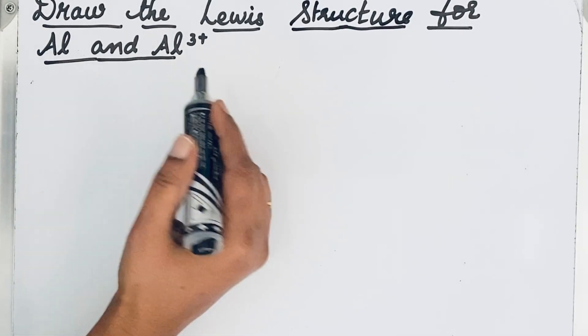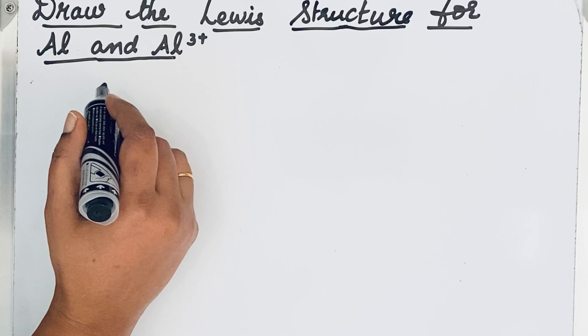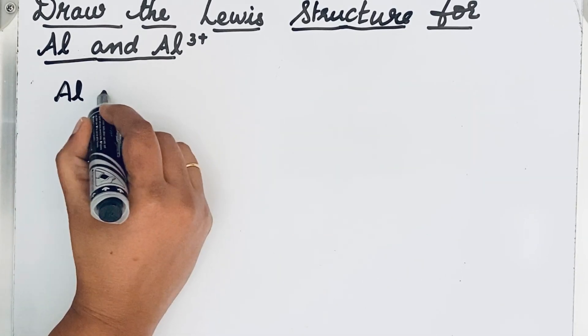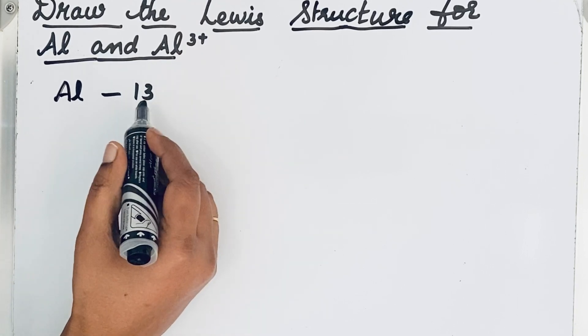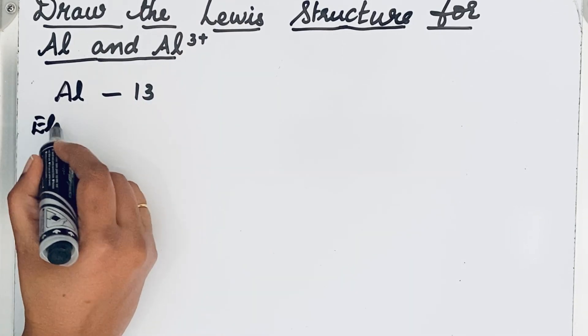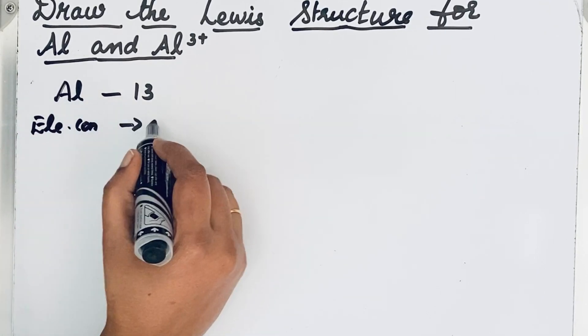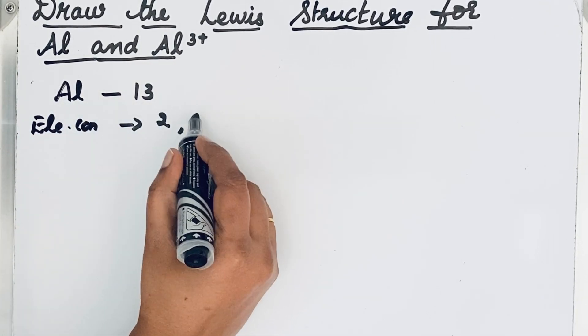To write the Lewis structure, we should know the atomic number of an element. So for aluminium, atomic number is 13. So after writing that atomic number, let us write electronic configuration for aluminium: 2, 8, 3.